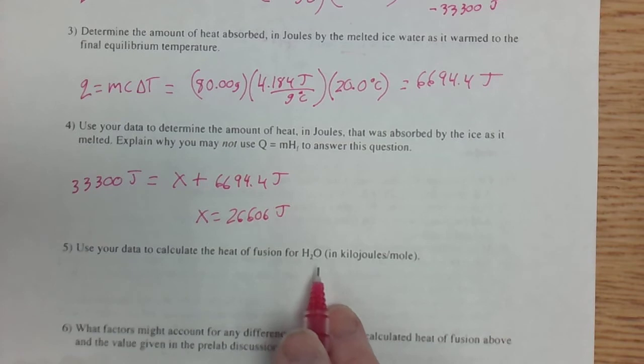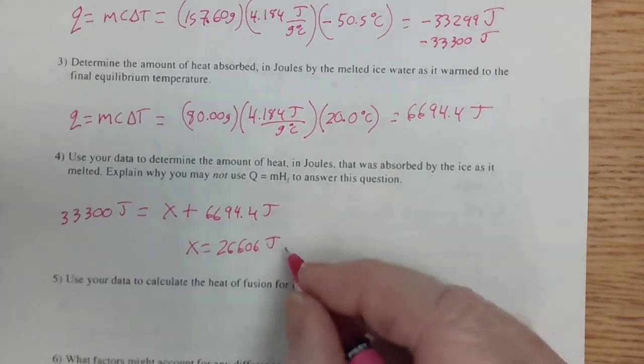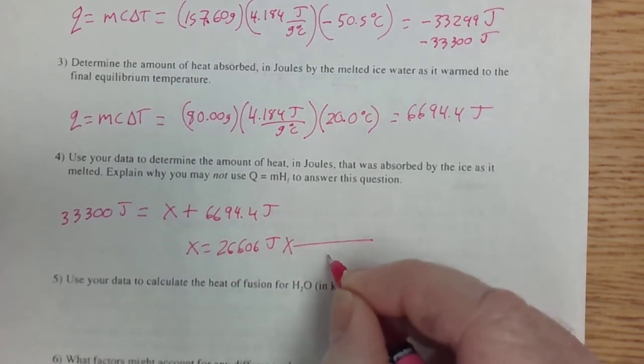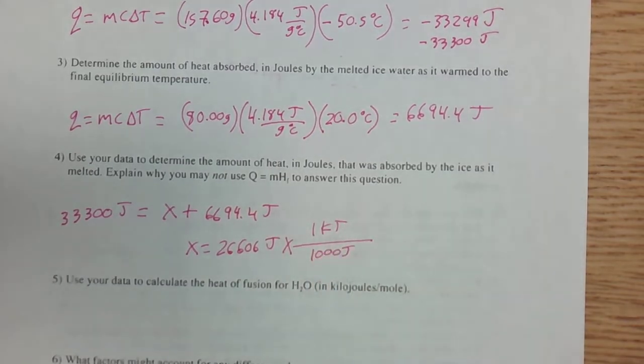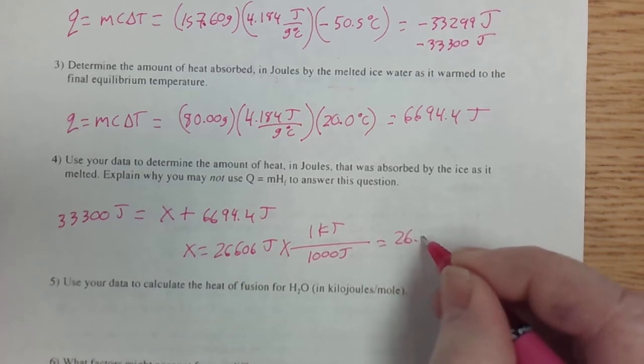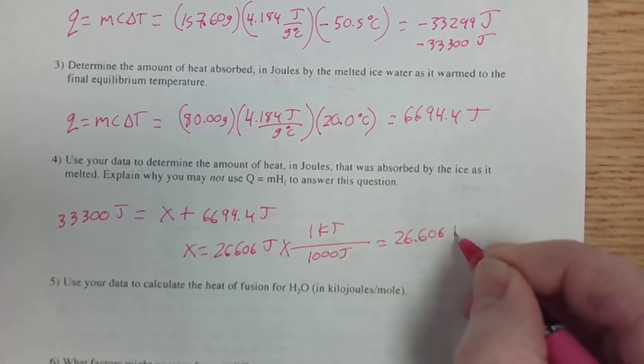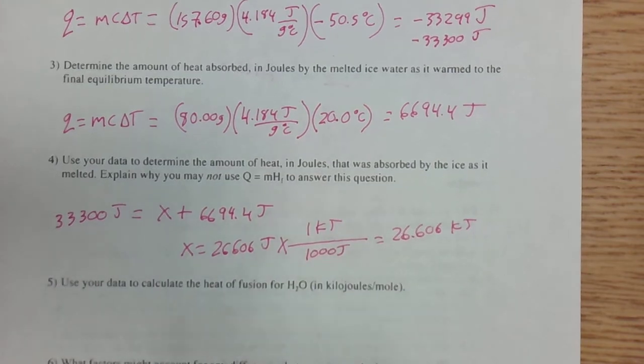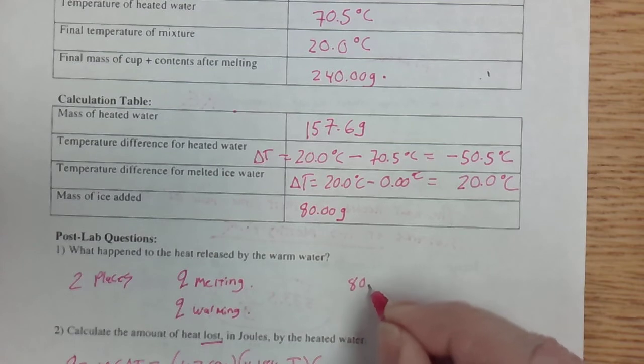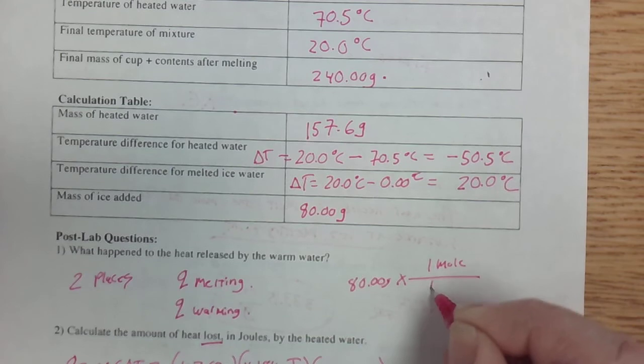Now we're going to calculate the heat of fusion for water. We're going to do it in kilojoules per mole. So we'll convert this into kilojoules. There's 1,000 joules per one kilojoule. So 26,606 becomes 26.606 kilojoules right there. And then we're going to convert the grams of water into moles. We had 80.00 grams times 1 mole is 18.02 grams.